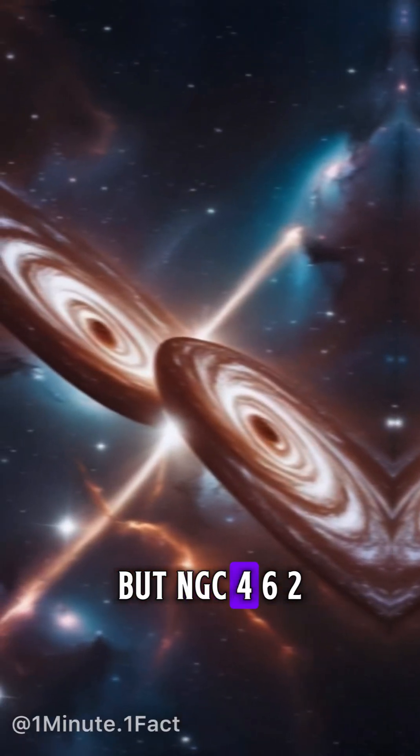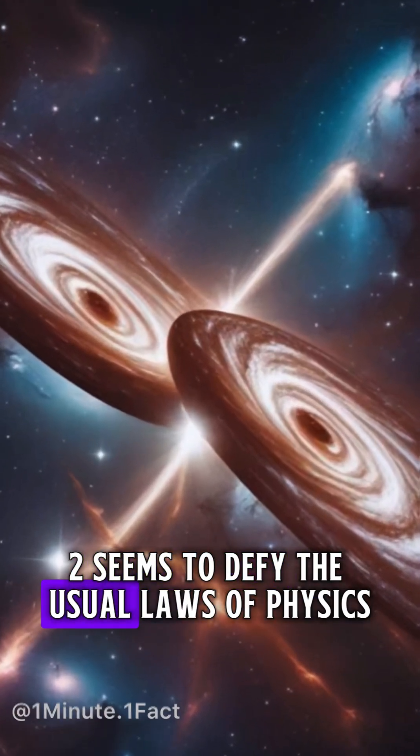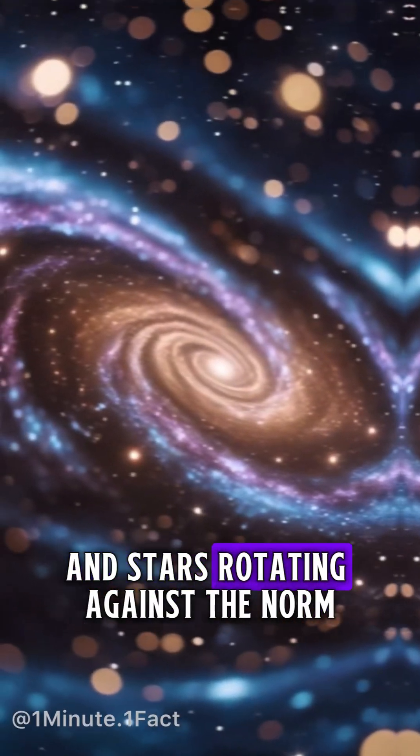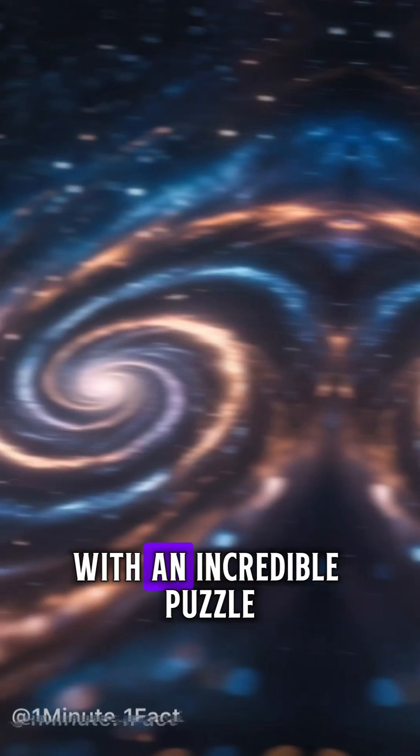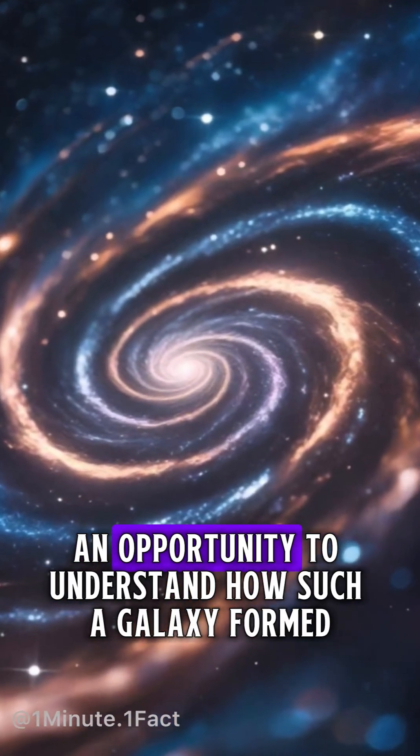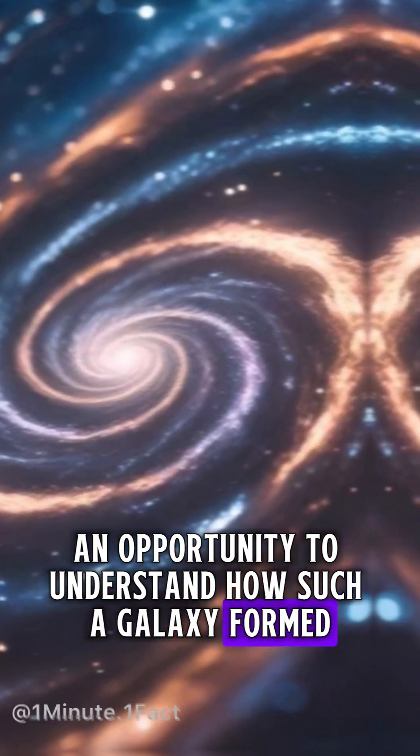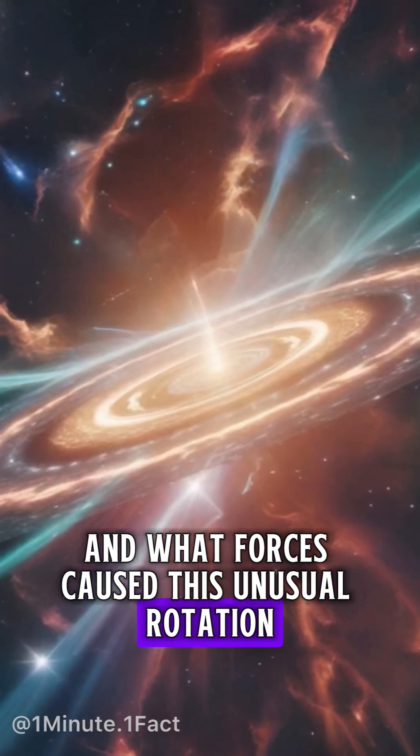But NGC 4622 seems to defy the usual laws of physics, with its spiral arms and stars rotating against the norm. This phenomenon presents scientists with an incredible puzzle, an opportunity to understand how such a galaxy formed and what forces cause this unusual rotation.